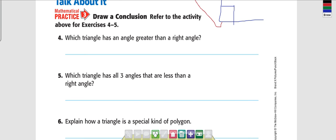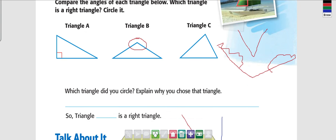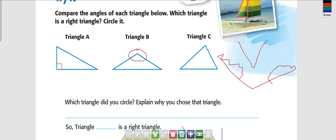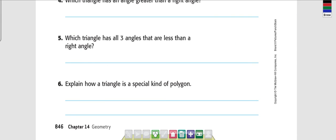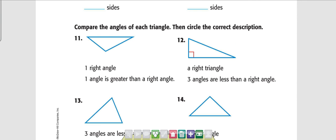Which triangle has all three angles that are less than a right angle? C — yes, C does.